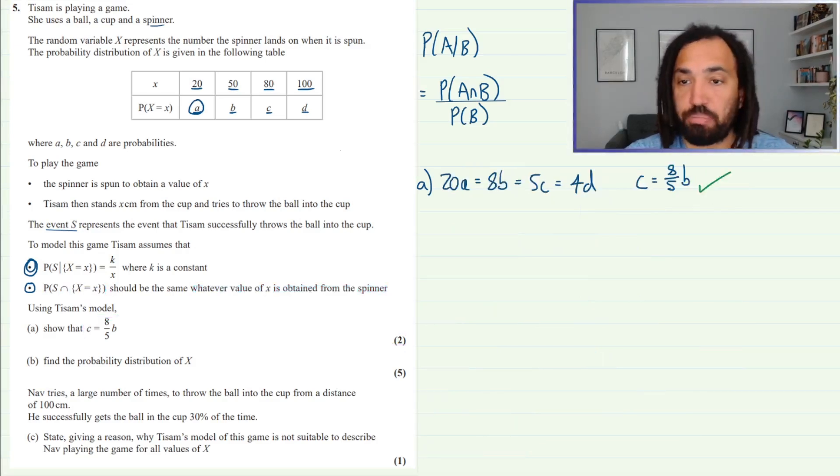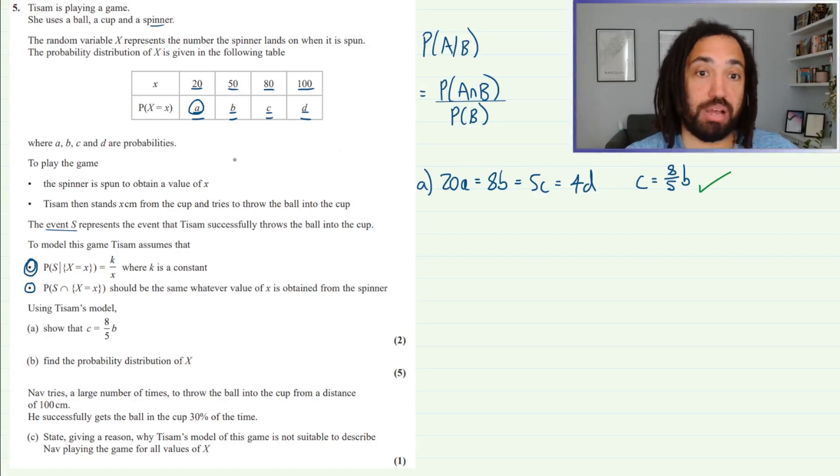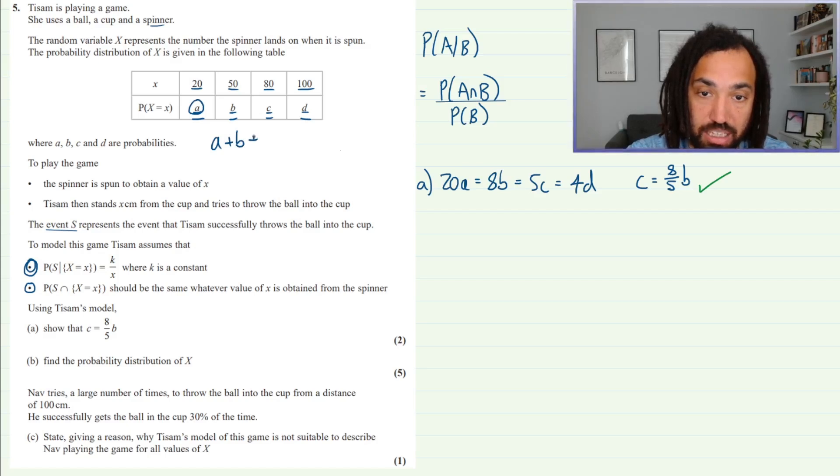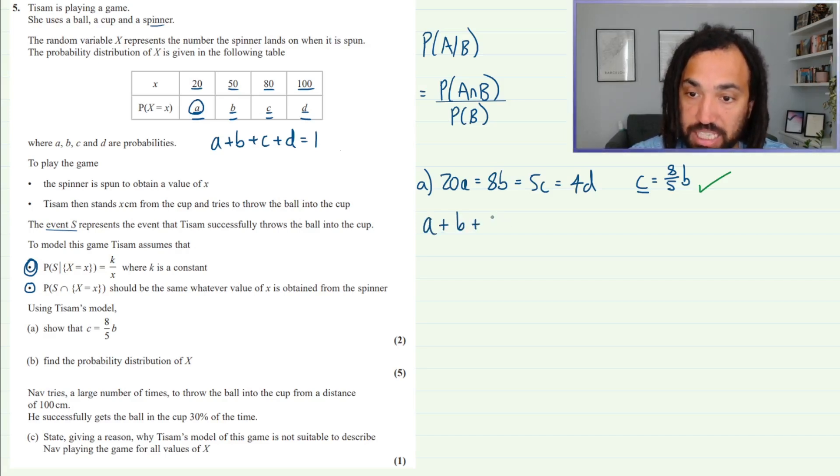Okay, so for part B we need to find the full distribution, which basically means we need to find values for A, B, C, and D. Now what we know from a discrete random variable like this is that the probabilities will always sum to 1. So we know that A plus B plus C plus D will equal 1. So we can use this equation and substitute in what we know already. We already have a value for C in terms of B, so let's rewrite this as A plus B plus C, or rather than writing C we're going to sub it out for 8 over 5B plus D is equal to 1.